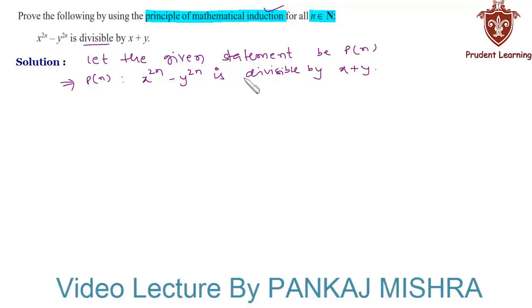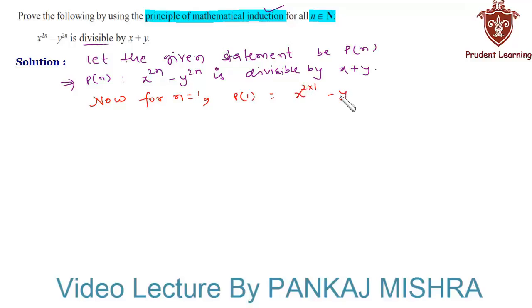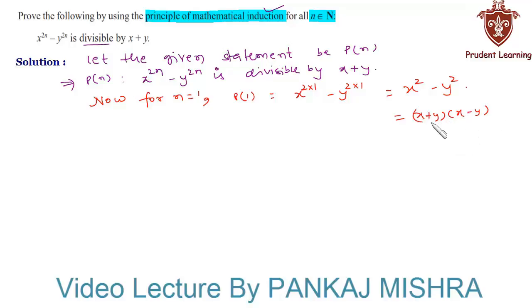Now we will check that this statement is true or not for n equal to 1. For n equal to 1, we have P(1) equal to x raised to 2 minus y raised to 2. We know that x squared minus y squared can be written as (x plus y) into (x minus y). Since (x plus y)(x minus y) is divisible by x plus y, therefore P(1) is true.